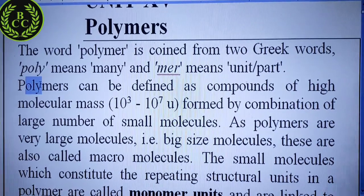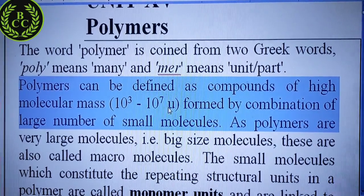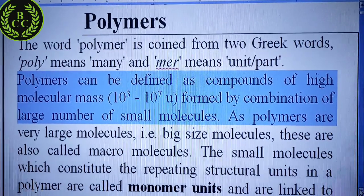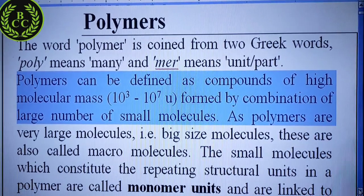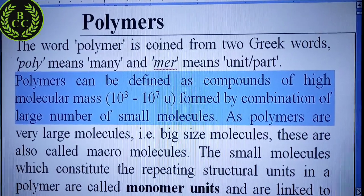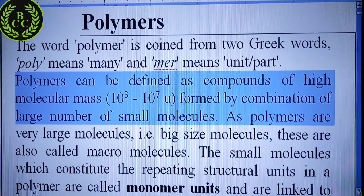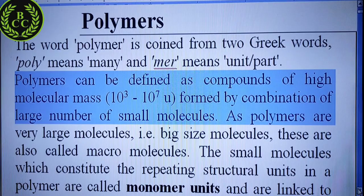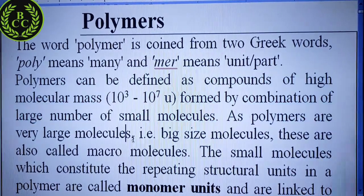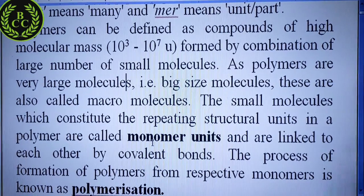Polymer can be defined as a compound of high molecular mass, ranging from 10³ to 10⁷ u. As you can see, the molecular mass is in this range, so it is clear that whatever molecule is made is very big. It is formed by the combination of a large number of small molecules, and since polymers are very large molecules, they are also known as macromolecules.